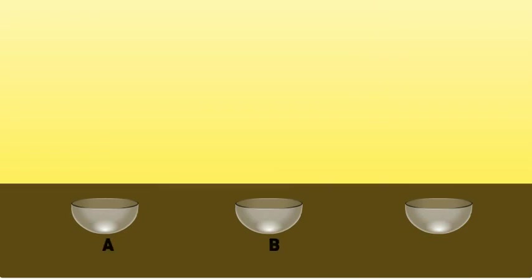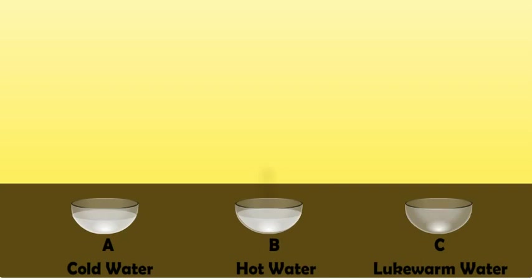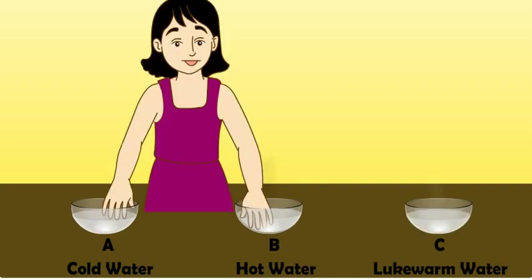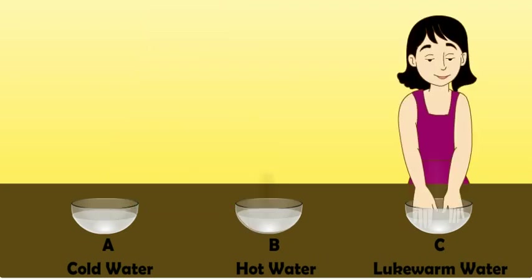Hot and Cold experiment: Take three bowls A, B, and C. Put cold water in bowl A, hot water in bowl B, and lukewarm water in bowl C. Dip your right hand in cold water in bowl A and left hand in hot water in bowl B. Keep the hands this way for about two or three minutes. Now take out both hands from bowls A and B and dip them quickly in lukewarm water in bowl C.